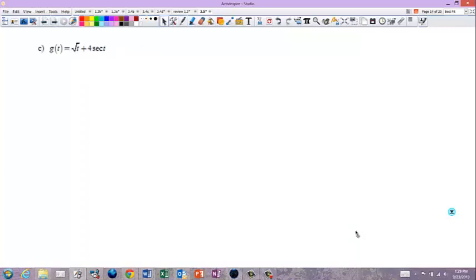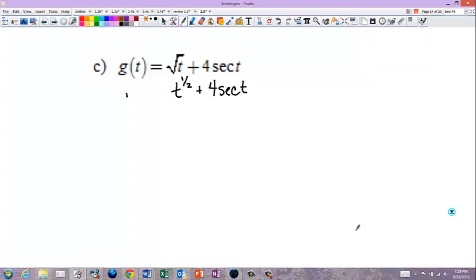I'm checking my time. I'm almost out of time. Y'all are going to be coming in in six minutes. I'm going to rewrite this as t to the one-half plus four secant of t. Just to make it easier to take the derivative, g prime of t is one-half t to the negative one-half plus the derivative of secant is secant tan. The four just sits. Tan of t. And that's it.